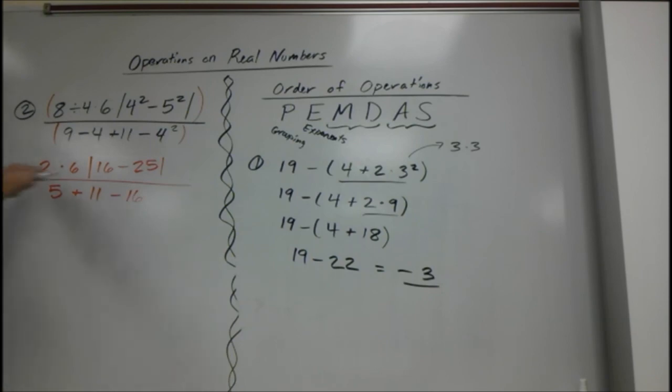Remember, multiplication and division, you can do this in order. We have 8 divided by 4, which is 2. So we get 2 times 6 times, make this absolute value. We have 4 squared is 16, minus 5 squared is 25. All over, and we can start working on this too. We have 9 minus 4 is 5. We'll just write that out for now. Plus 11 minus 4 squared is 16. And we'll keep working on the top. We have 2 times 6 is 12.